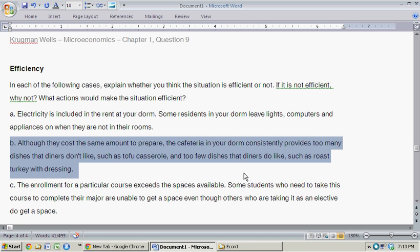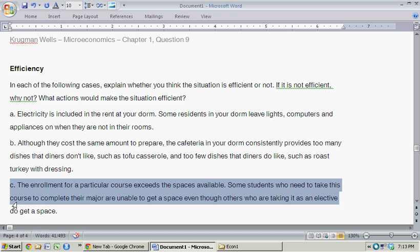Basically, the situation where people are able to get their additional roast turkey dressing that before wasn't available to them because they ran out. Moving on to the last one. C. The enrollment for a particular course exceeds the spaces available. Some students who need to take this course to complete their major are unable to get a space, even though others are taking it as an elective, do get a space.